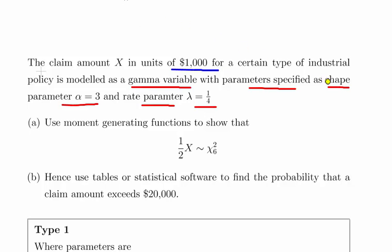Just to be clear, that's the shape parameter and the rate parameter. I'm spelling it out there. In some other videos I had to make a guess as to which was which. Use the moment generating function to show that 1/2 of X is a chi-squared random variable with 6 degrees of freedom.